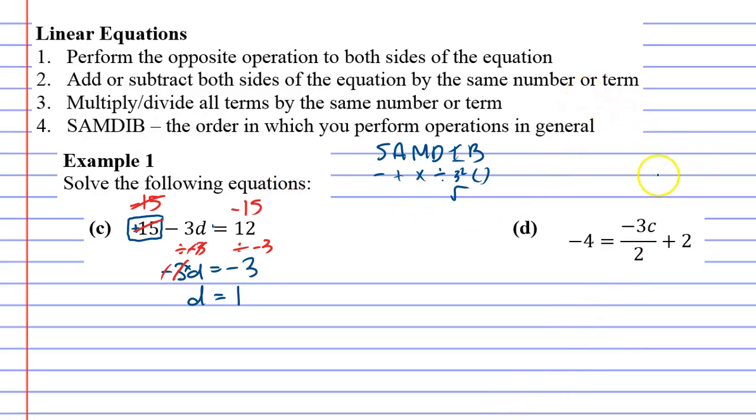All right, now this one's a bit weird because we've got the pronumeral on the right side of the equals sign. This is really easy to fix because you can just swap them around at any time. So you can just swap sides on the equals sign. All right, we've swapped sides.